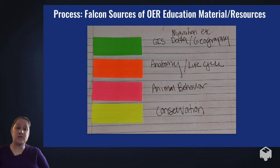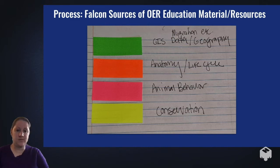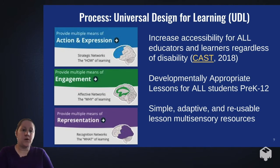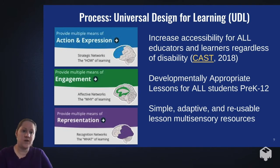The second step was to create groupings of the type of Falcon OER that could align with the Common Core standards and systems already in place. Once we examined our own Falcon data resources, we were able to generate four categories, including migration and geography, anatomy and life cycle, animal behavior, and conservation and policy. We also wanted to increase the sustainability of the Falcon curriculum project beyond the OER framework to also include different aspects of accessibility. As part of the call to action, we plan to incorporate the Universal Design for Learning principles in all lesson concepts and resources developed, including using multiple means of action and expression, engagement, and representation.